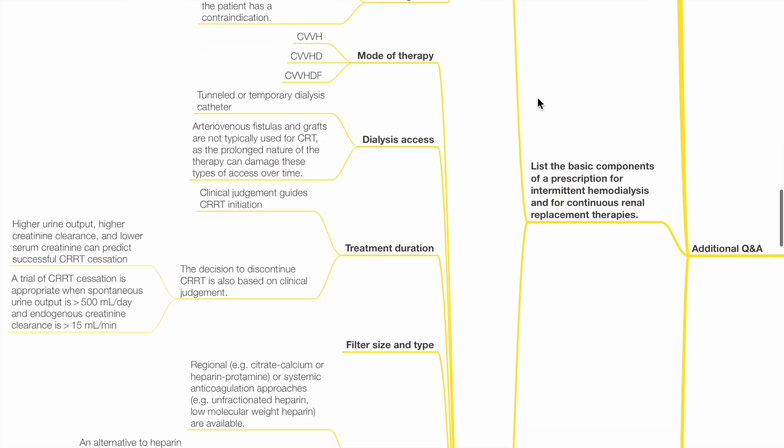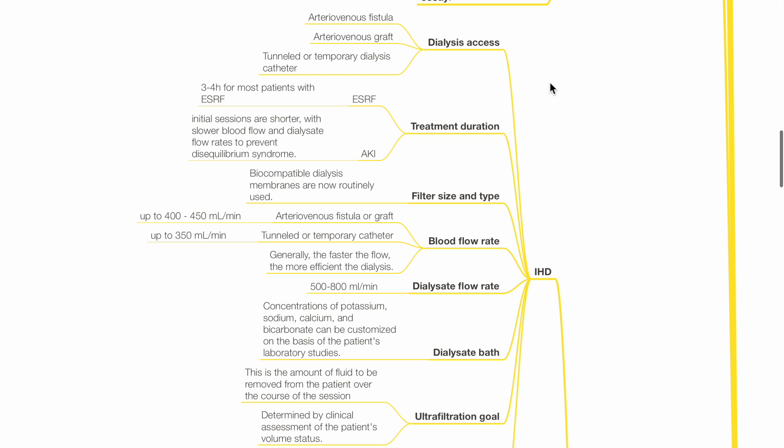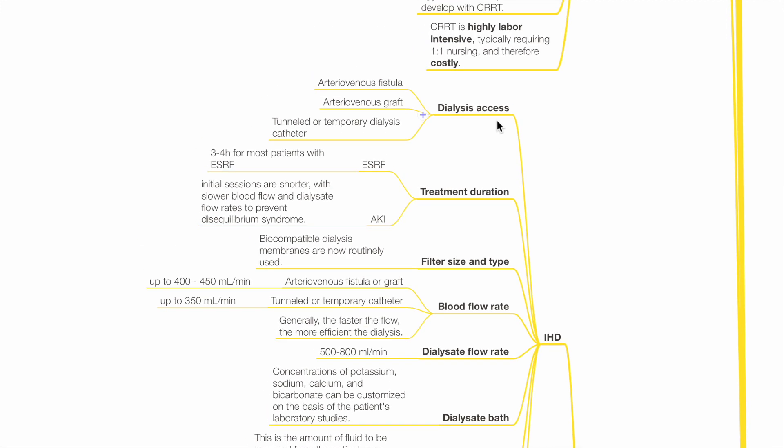List the basic components of a prescription for intermittent hemodialysis and for CRRT. For IHD, dialysis access may be AV fistula, AV graft, or dialysis catheter.